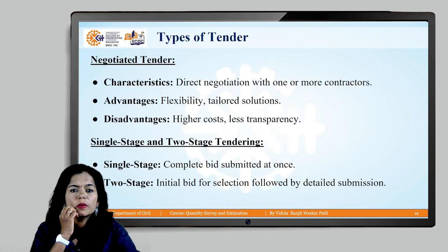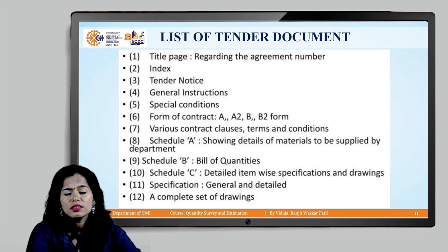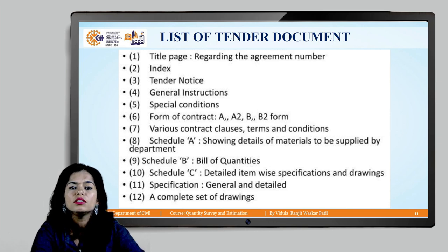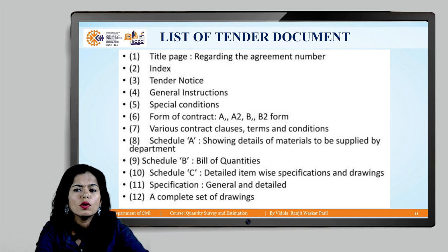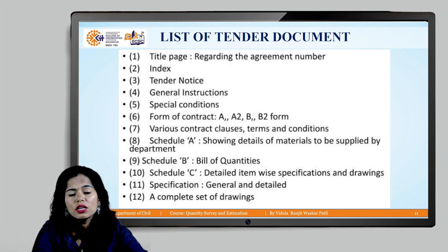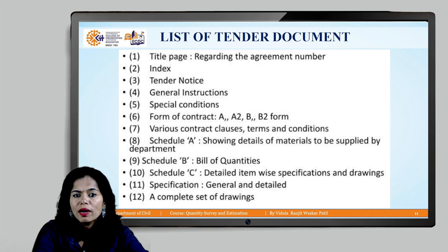Now, what is the standard tender document? The list of contents includes: first, the title page — giving all details of the agreement, the project, who is executing it, which department, and the cost of the project. Then the index, followed by the tender notice. The tender notice informs contractors that this tender is open and the project needs to be executed. It is floated on the department portal or published in the newspaper, and it also becomes part of the tender document.